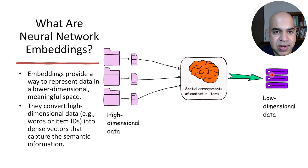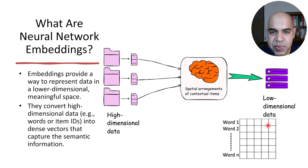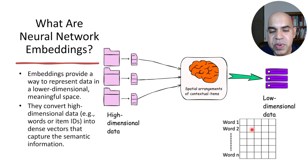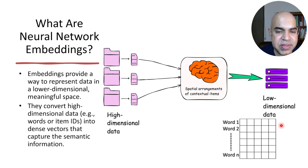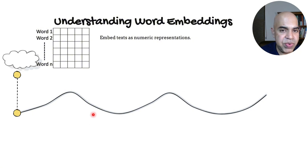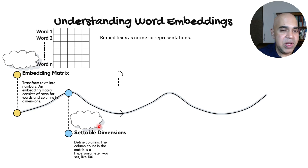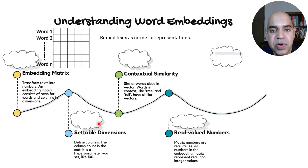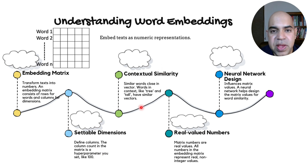Embeddings also help you transform high-dimensional data to low-dimensional data. You can consider neural network embeddings as a matrix. For text data, if you have n number of words, then the embedding matrix should contain n rows and a certain number of columns. The number of columns is a user-settable parameter — if you define that each word should be represented as a vector of length 100, then the number of columns should be 100. We use embedding matrices to transform text into numbers.